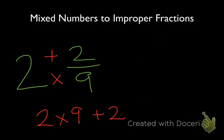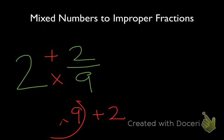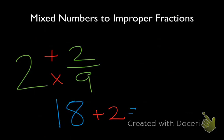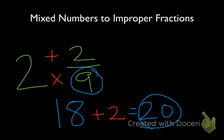We know that 2 times 9 is going to be 18, and 18 plus 2 is 20. So once we have found that number, we put that over our original denominator of 9. So 2 and 2 ninths as an improper fraction becomes 20 ninths, or 20 over 9.